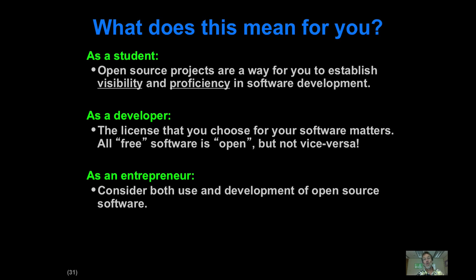So what does open source mean for you? As a student, participating in and creating open source software is one of the single most valuable things you can do in computer science, because it provides tangible artifacts that future employers can look at to understand what you're actually capable of. As a developer, you have to think about the license you choose, because it has non-trivial implications for what kind of development community grows up around your software. And if you're thinking of starting a business, using the open source paradigm can actually provide business advantages as well.